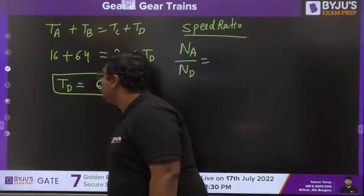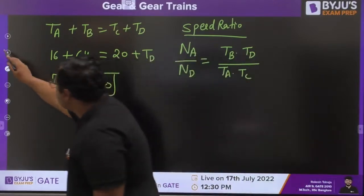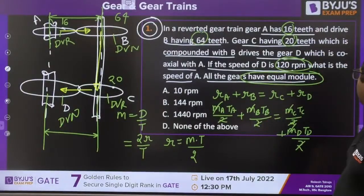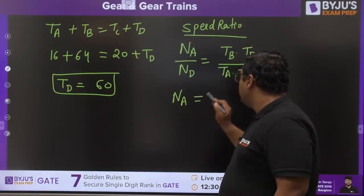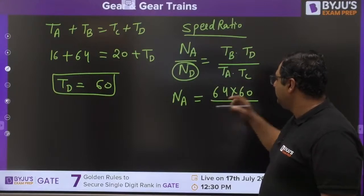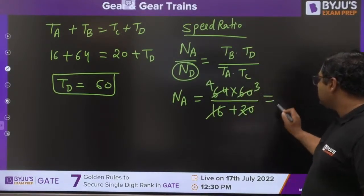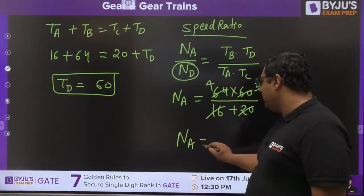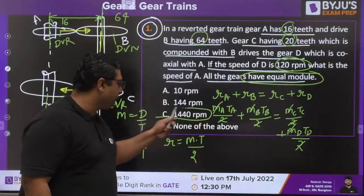The speed of D is 120 RPM; NA is unknown. Substituting: NA/120 = (64 × 60) / (16 × 20). This gives NA/120 = 3840/320 = 12, so NA = 1440 RPM. The answer is option C — 1440 RPM. Well done to everyone who got it right.